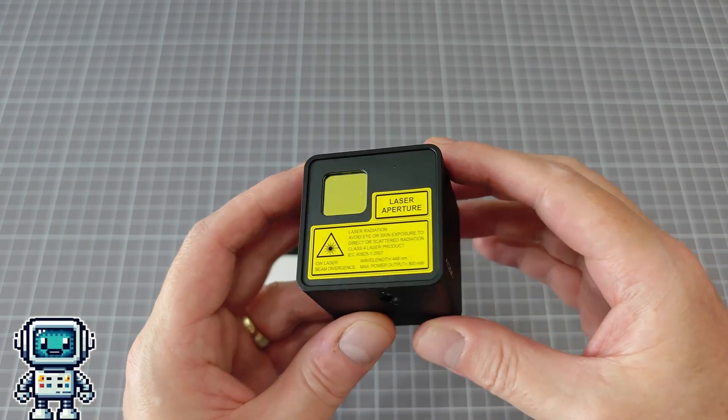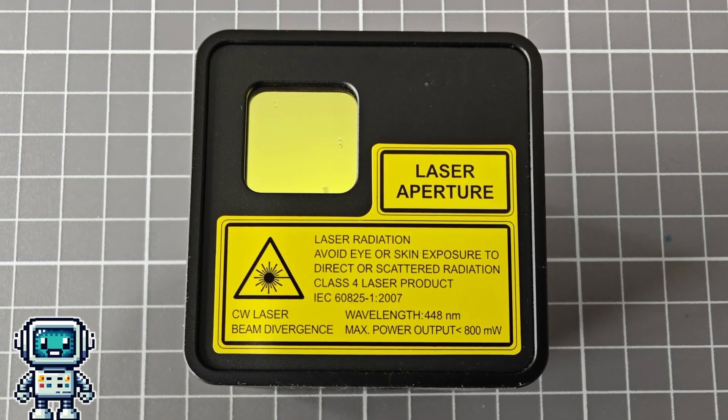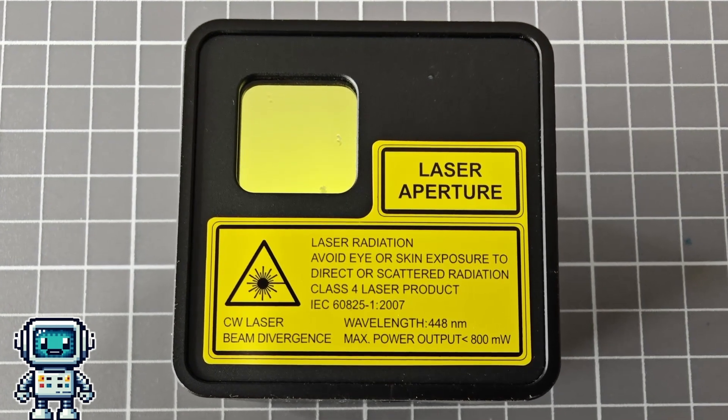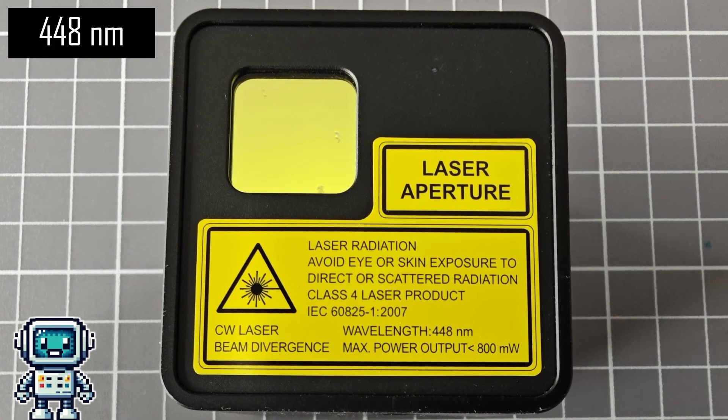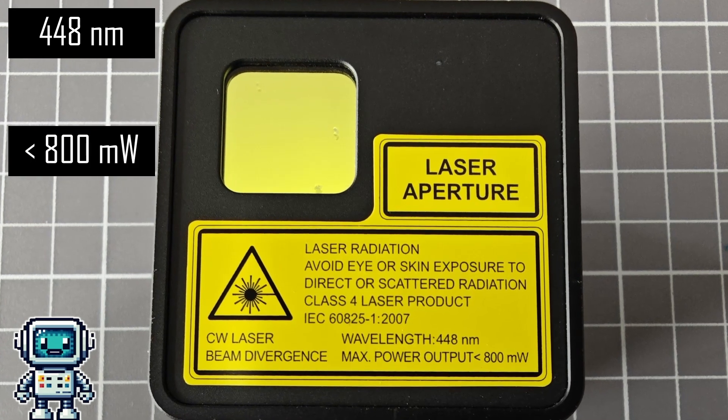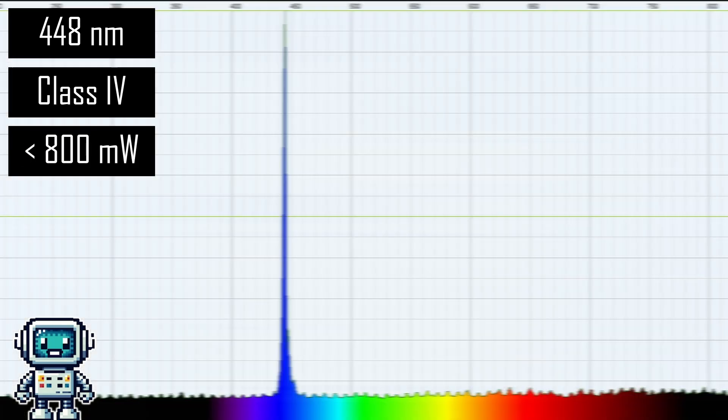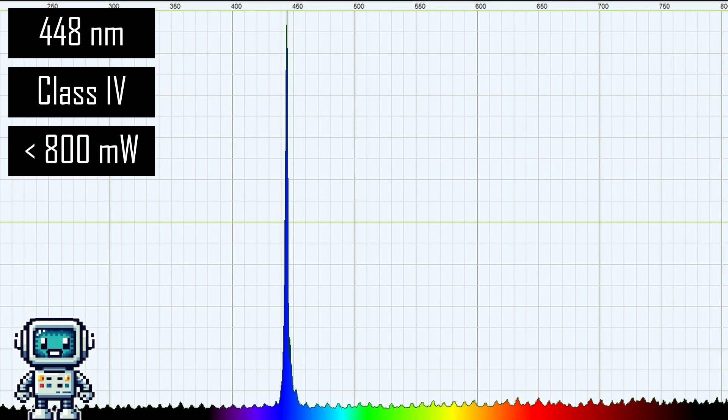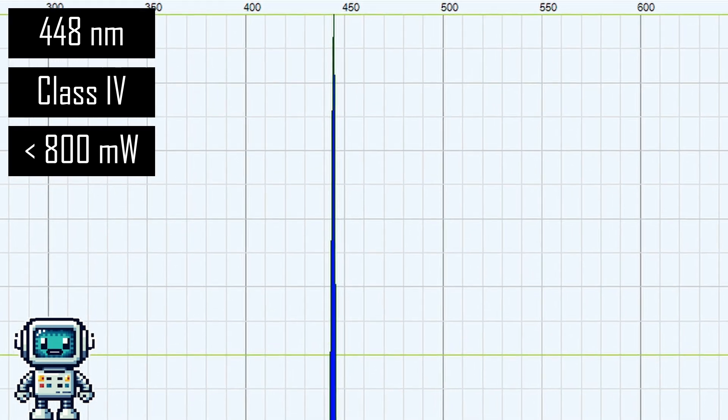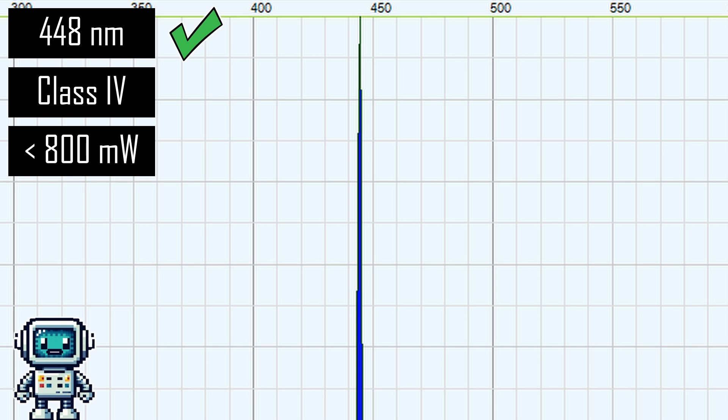This piece of kit is a mini laser engraver. The ratings label states it has a wavelength of 448 nanometers, an output power less than 800 milliwatts, and as such is a Class IV device. We previously tested the wavelength of this engraver using a different spectrometer and confirmed that the wavelength is correct.